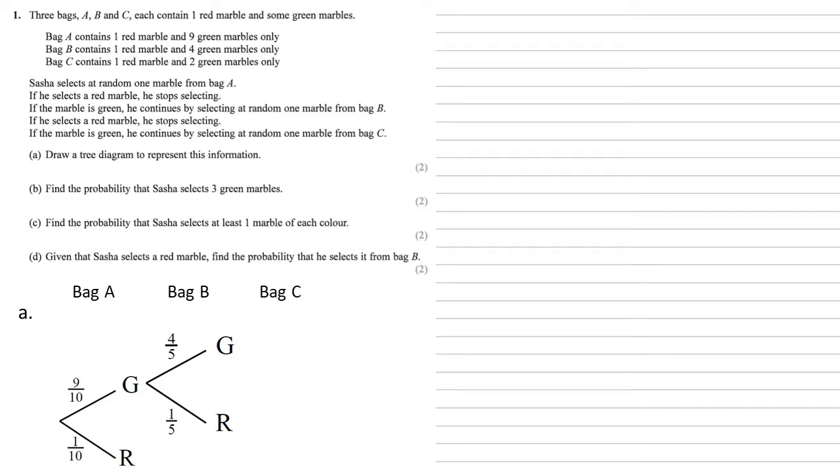For bag C, it's the same again. Red means we stop, so there are no branches coming out of bag B's red branch. Instead, we're going to split the green. This time it's one red marble to two green marbles. So two out of three for green or one out of three for red.